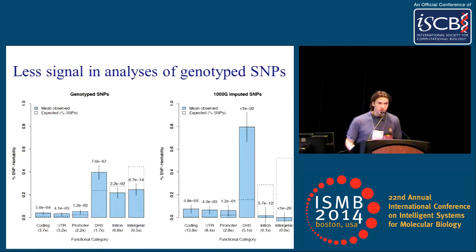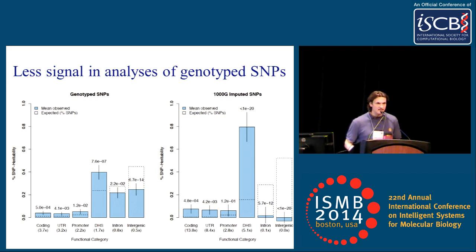One thing we tried was asking: what if we hadn't used imputed SNPs? What if we just used the genotyped SNPs? The signal is still there, but much weaker when restricted to genotyped SNPs. Presumably, causal coding or DHS SNPs are best tagged by SNPs in the intronic or intergenic category, causing some heritability to leak into those categories. This is why we believe it's important to include imputed SNPs to get the strongest possible signal.